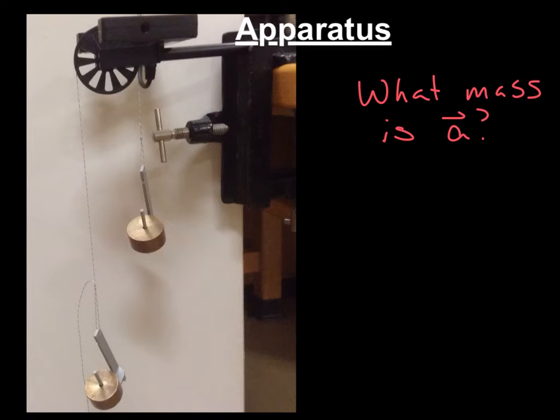So now let's look at what mass is accelerating. Newton's second law says a force causes a mass to accelerate. The force is the weight difference between the two hangers. So if we look at this, the mass is accelerating. That hanger is moving. This hanger is accelerating. And the pulley is accelerating.